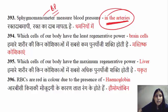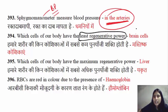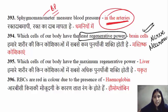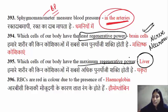Which cells in your body have the least regenerative power? Nerve cells — neurons. And the organ with maximum regenerative power is the liver.